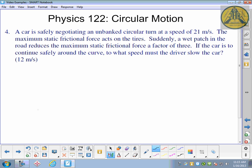We got another circular motion question, this one probably a little more complicated—one of the questions we've been doing in grade 12 class. A car safely negotiating an unbanked circular turn at a speed of 21 meters per second, the maximum static frictional force acts on the tires. Suddenly, a wet patch reduces the maximum static friction force by a factor of three—remember that means divided by three. If the car is to continue safely around the curve, what speed must the driver slow to? We're hopefully going to get an answer around 12 meters per second.